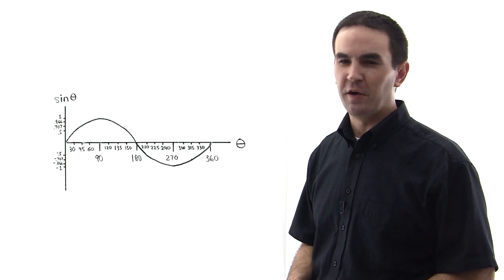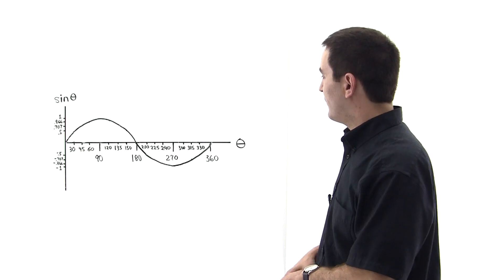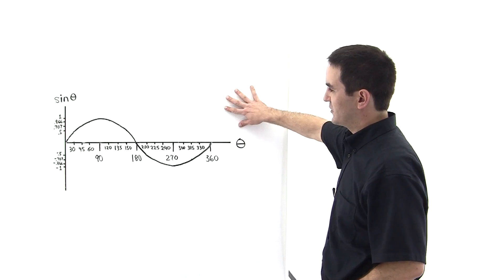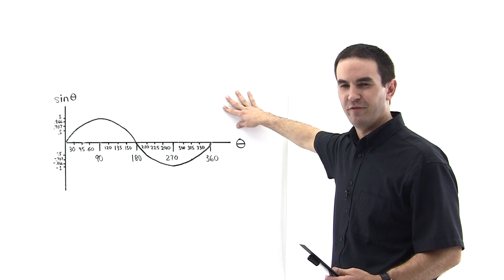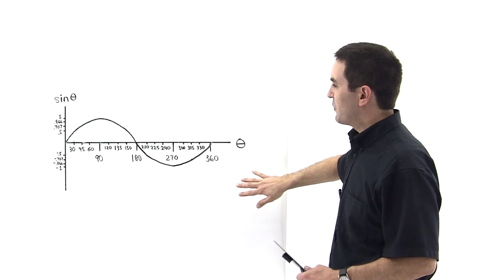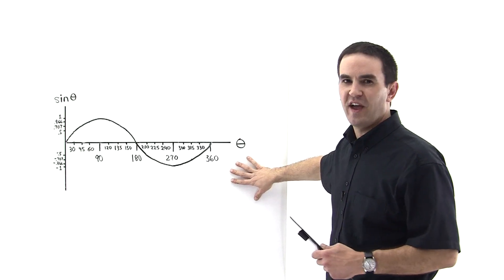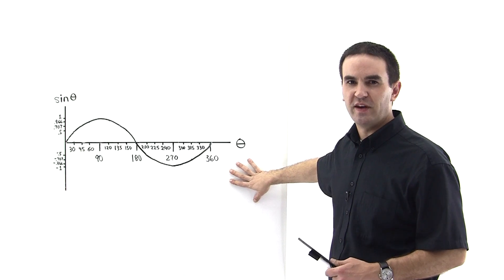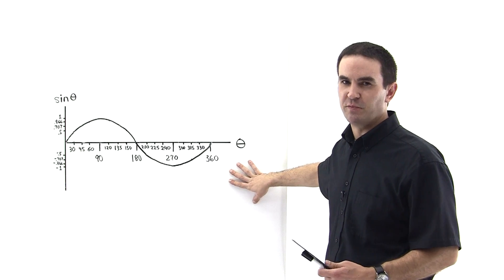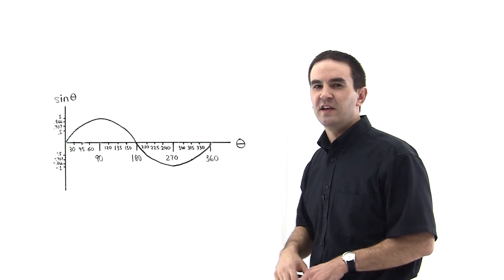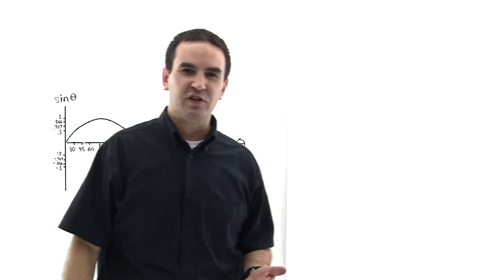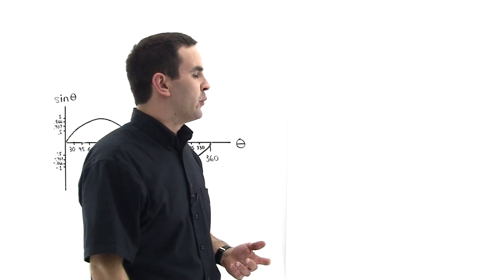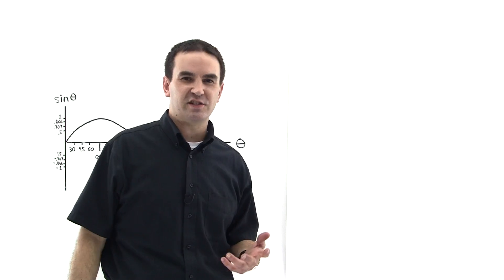Where does the sine function come from? We've all seen this function graphed before, but where does it come from? To understand where the sine function comes from, we need to take a look at a circle.